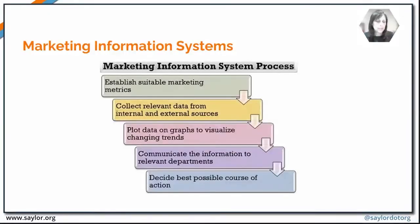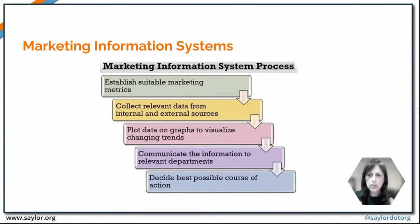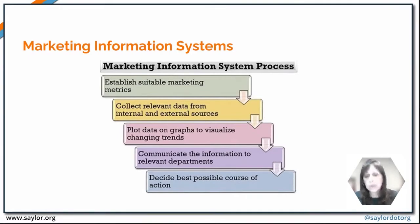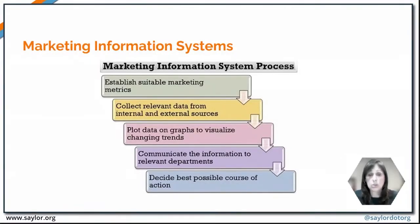You have to be able to visualize changing trends over time. Looking only at the past two or three years won't give you the full picture. Once you gather information, you communicate it to the relevant departments and ensure it's what they need. Then you decide on the best possible course of action. The system is essential — from determining which metrics to use all the way through to making decisions.